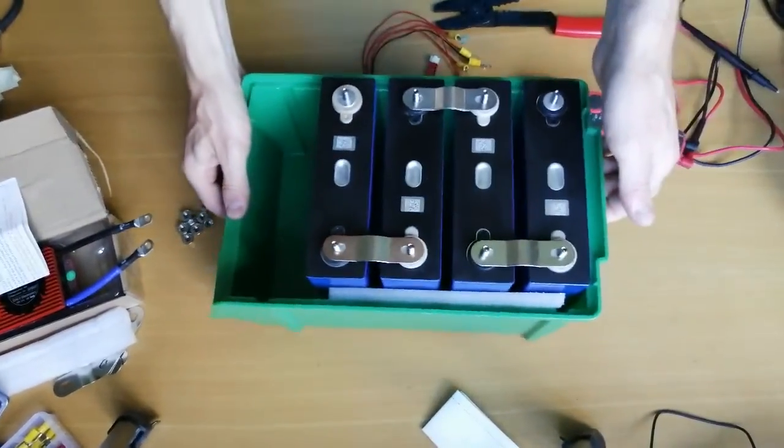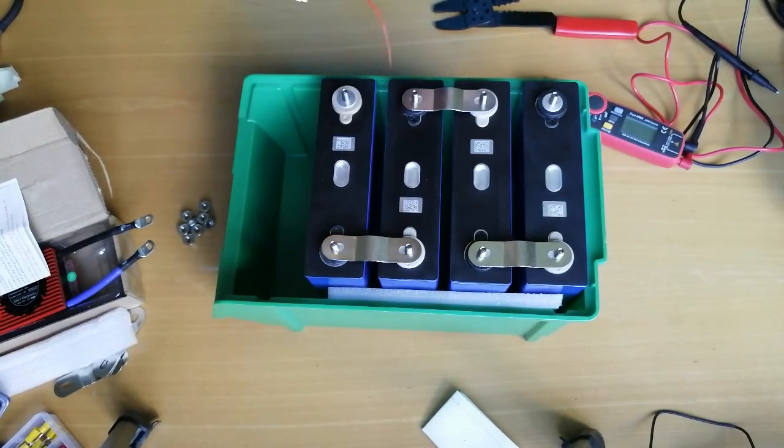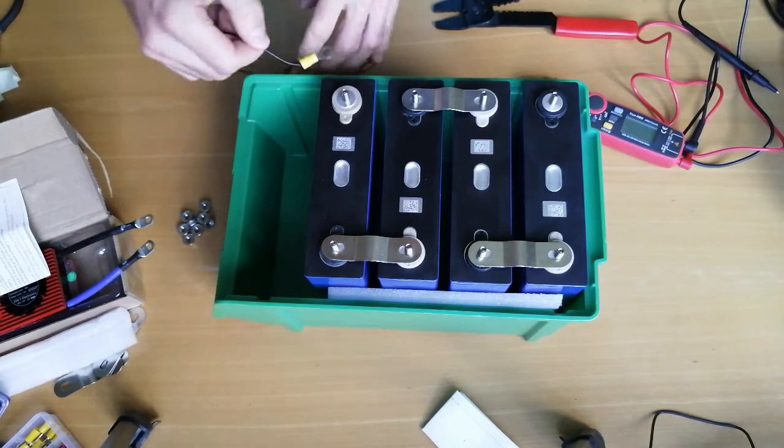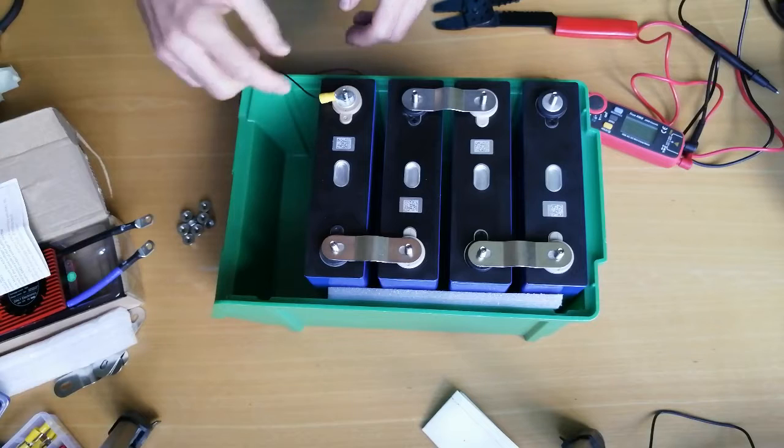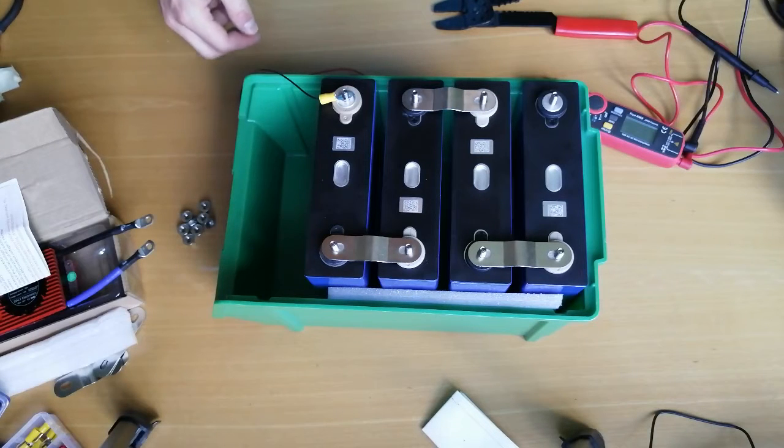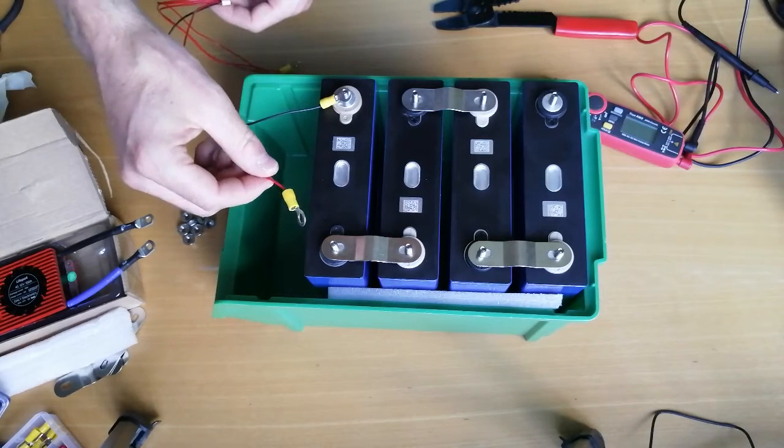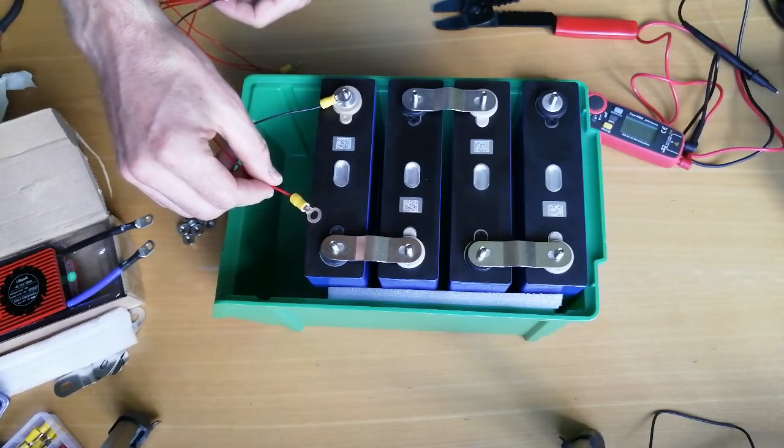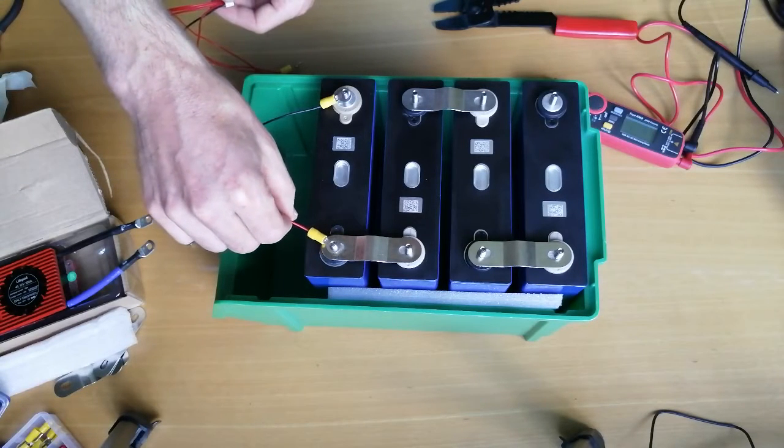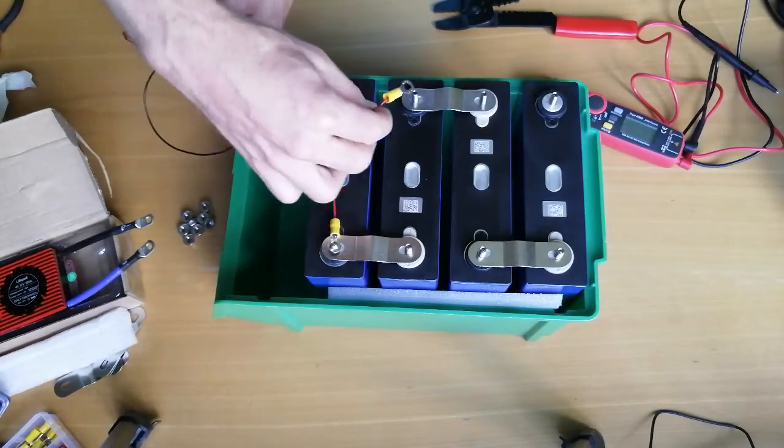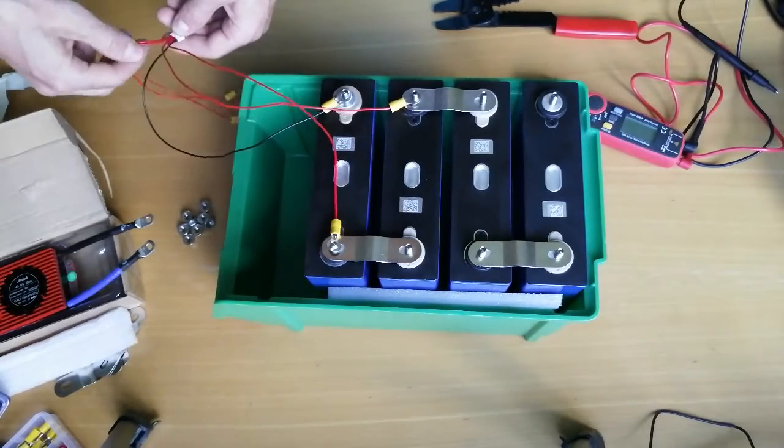And here we are, ready to go. So first of all you connect the balance leads to your terminals and you start always with the black one. So the black one goes to the most negative terminal on the first cell, and then the other ones they go to all the positive ones. So the next cable next to the black one goes to the first positive one, the second red one to the second one, the third one to the third one, and the fourth one to the most positive terminal at the end, the last cell.